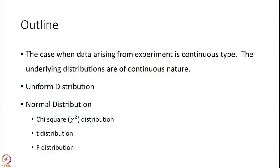In this session we would like to look at all those distributions which may arise when the experiment gives out data of a continuous nature, and therefore the underlying distributions are also of continuous type. We will introduce primarily the uniform distribution and the normal distribution. In further slides we will introduce other distributions such as chi-square, T distribution, and F distribution, which are derived from the normal distribution. But first, in this session we are going to study normal distribution in detail.